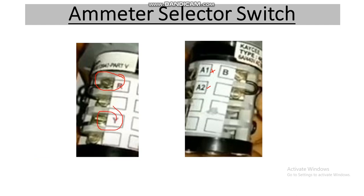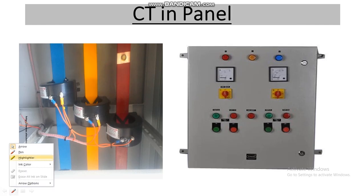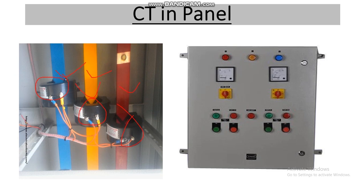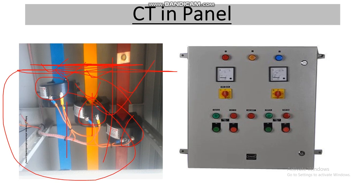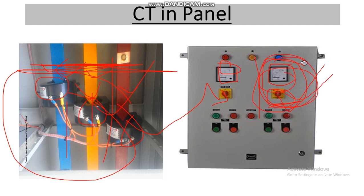The selector switch connection terminals are: R terminal, Y terminal, B terminal, and the ammeter connection terminals a1 and a2. When we look into the panel, the CTs are already installed inside, inserted into the R, Y, B bus bars to measure the circuit current. Here we also have the selector switch and the ammeter. Note: the voltmeter and voltmeter selector switch visible here will be discussed in the next video.